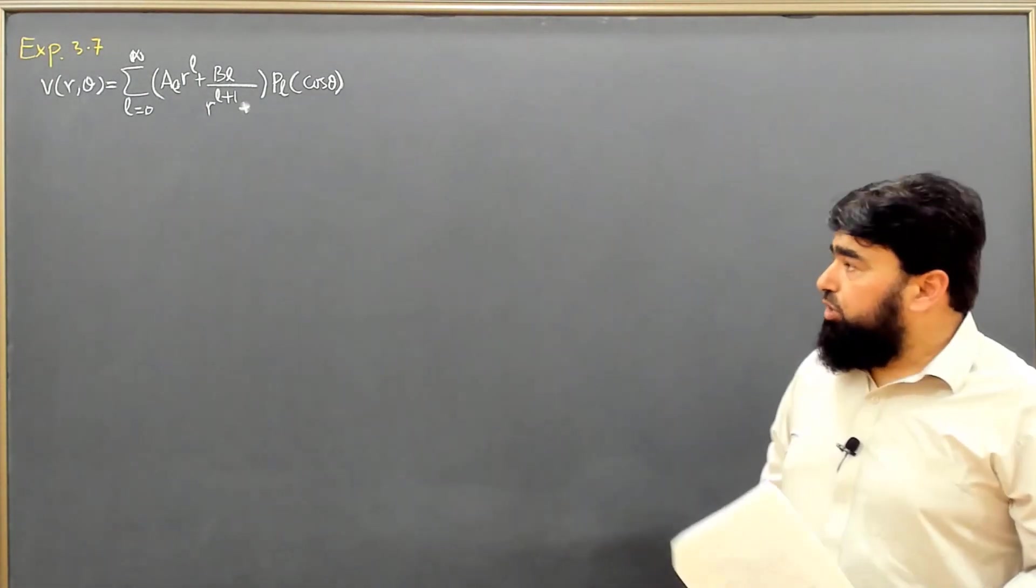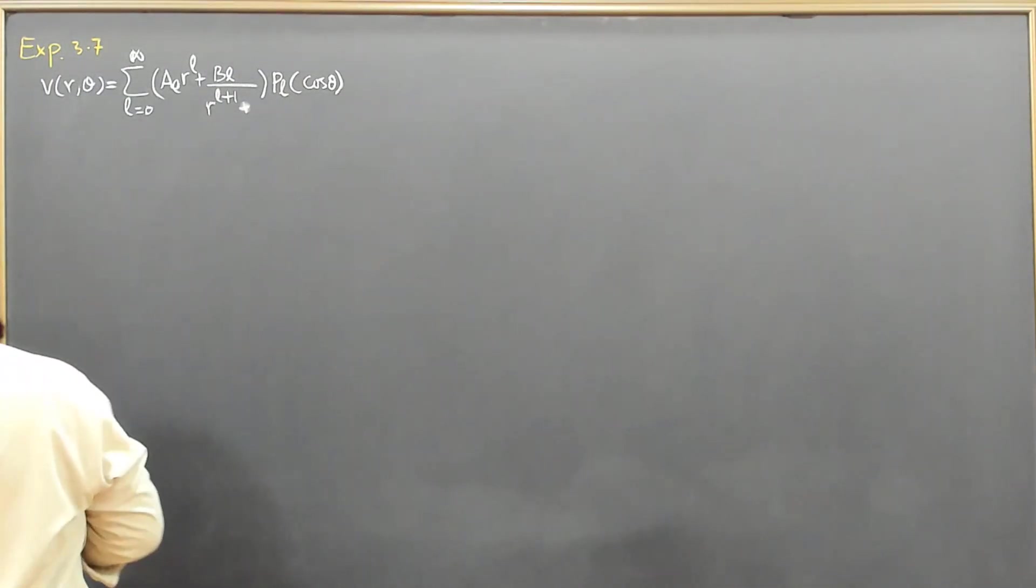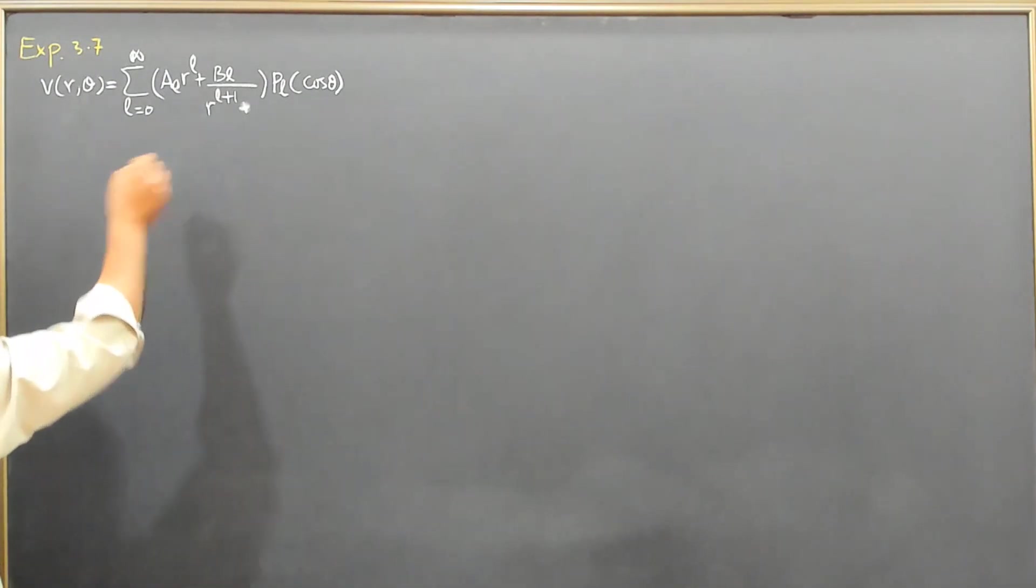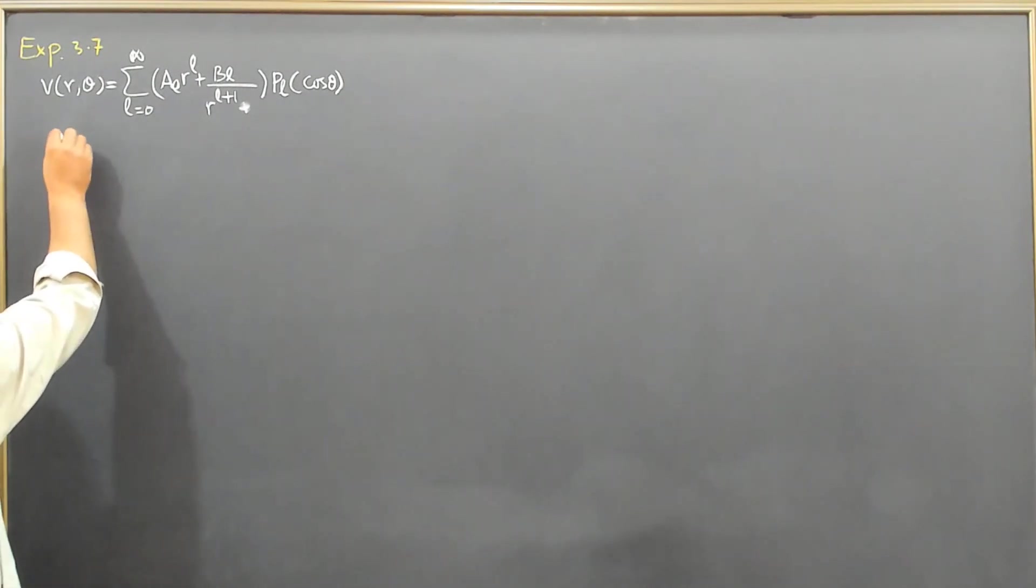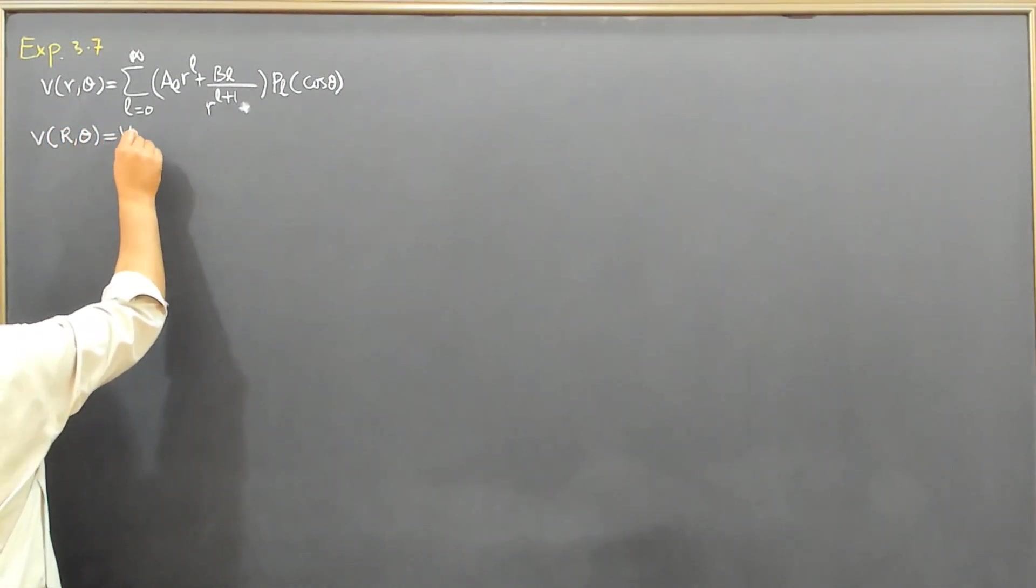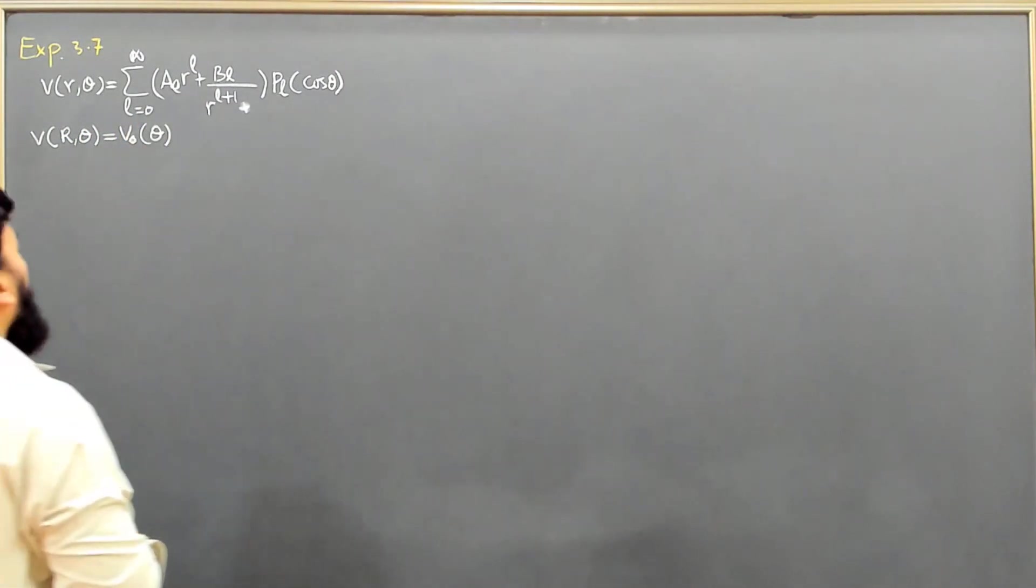As you remember, in the earlier situation BL was going to 0 because inside it was blowing up inside the sphere. Now as we are calculating outside the sphere, on the surface where R and theta are present, the potential is V₀ as a function of theta only.